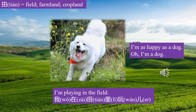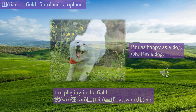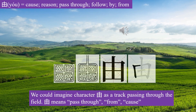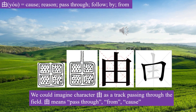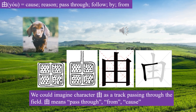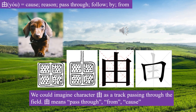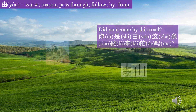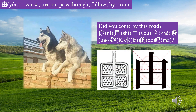I am a dog. Let's learn character Yóu. We could imagine Yóu as a track passing through the field. Yóu means pass through, from. Yóu. Did you come by this road?